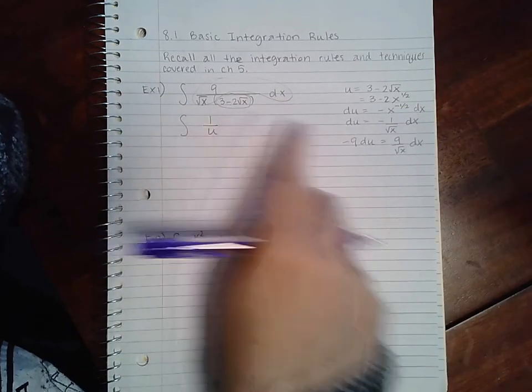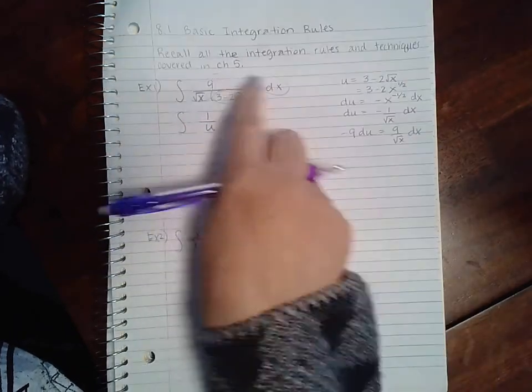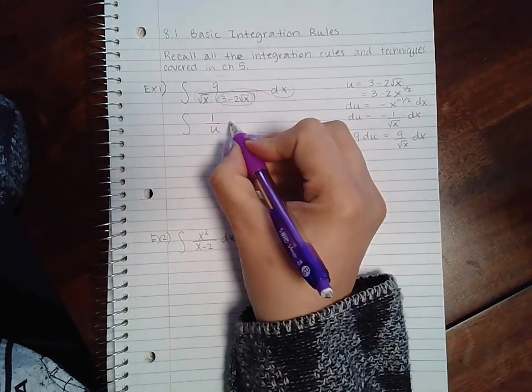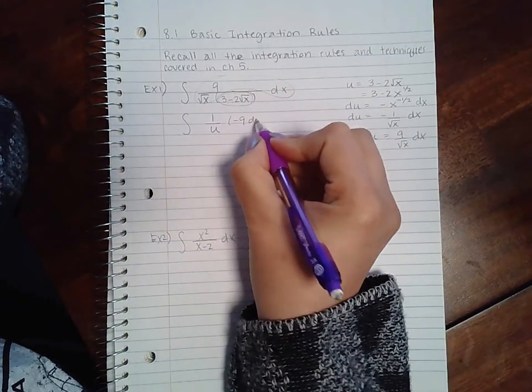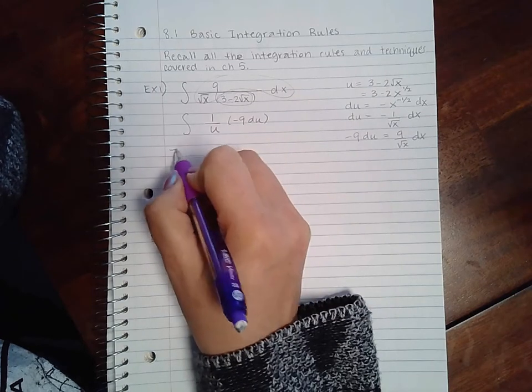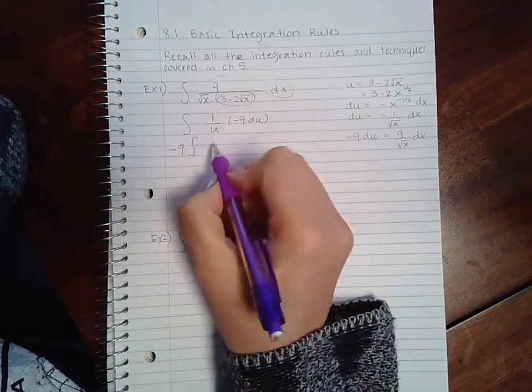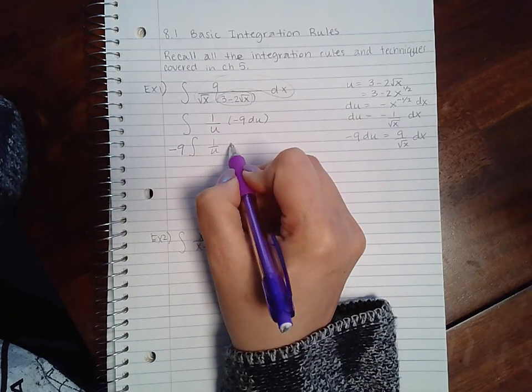And then I get what I'm trying to substitute for. So all of these things here are going to become negative 9 du. Now the negative 9 can be taken outside of the integration, and I end up with 1 over u du.